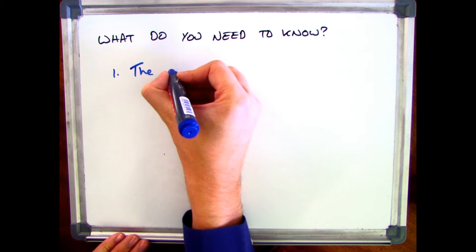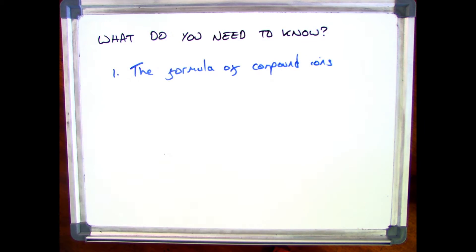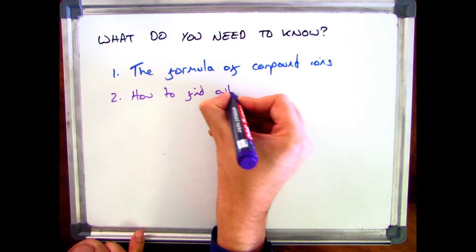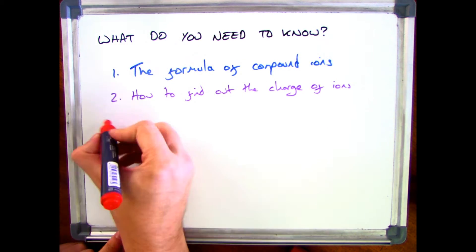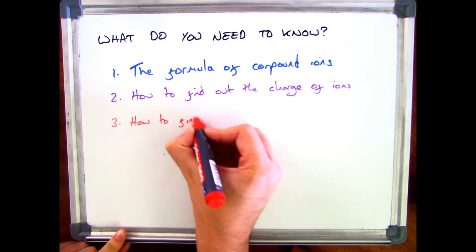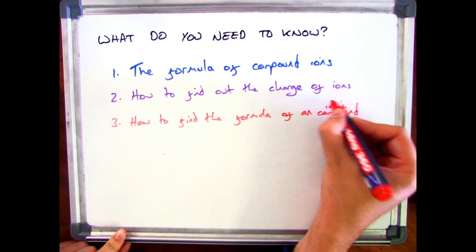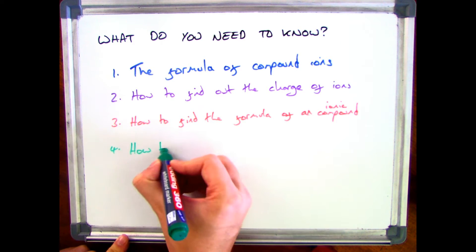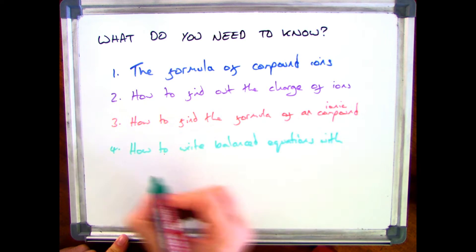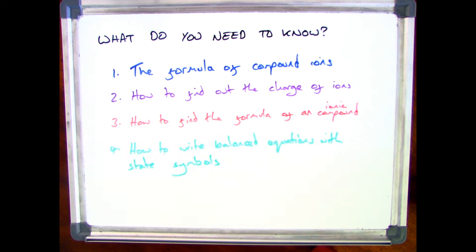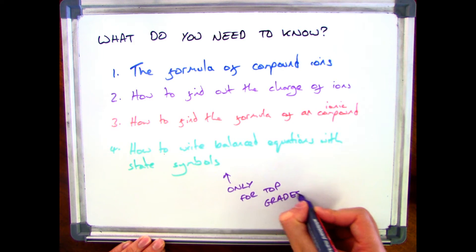Before you start, there are a couple of things that you need to know. The first is the formula of the compound ions. The second is how to find out the charge of ions from groups 1, 2, 6 and 7. Third, how to find the formula when you've got those ions and charges. And fourth, how to write and balance chemical equations including state symbols. There are four videos I'd like you to watch before we do anything else, and the fourth one is only for top grades.